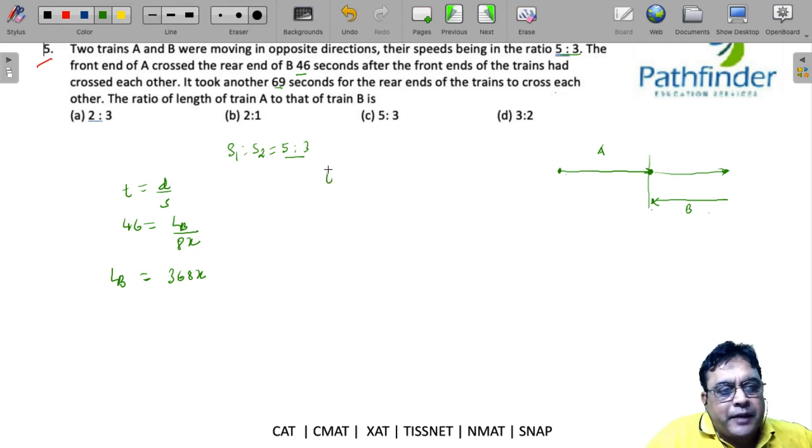So the time of crossing of the two trains is 115 seconds. So what do you get? LA plus LB upon the relative speed 8x must be equal to 115. So LA plus 368x upon 8x must be equal to 115.